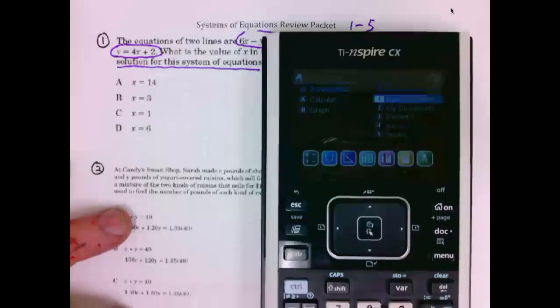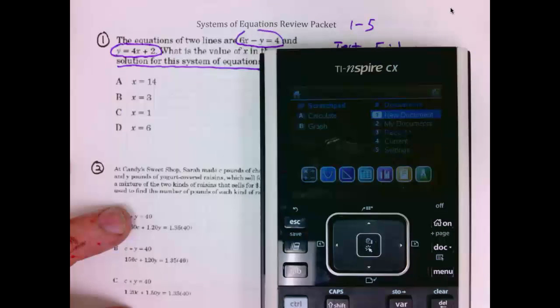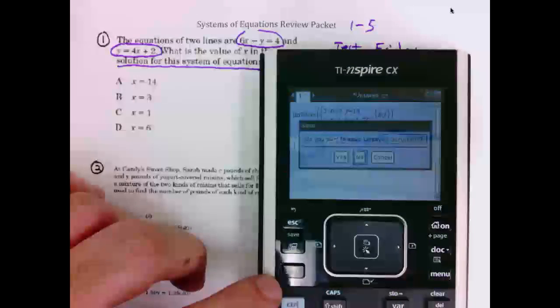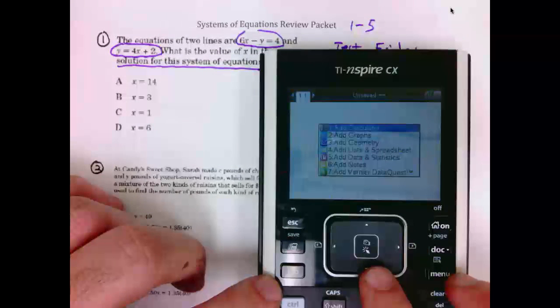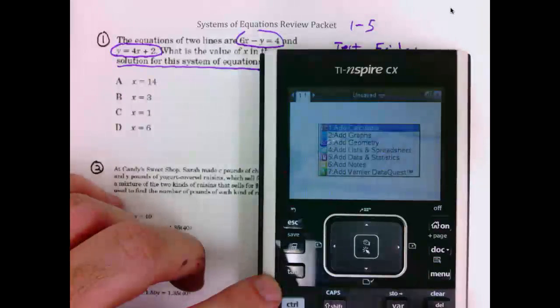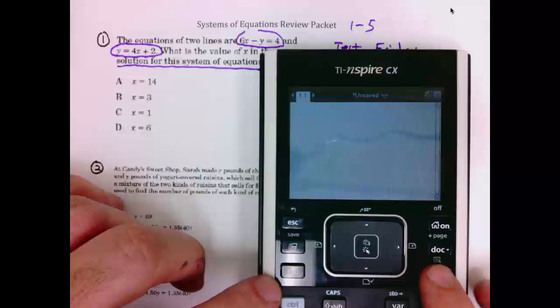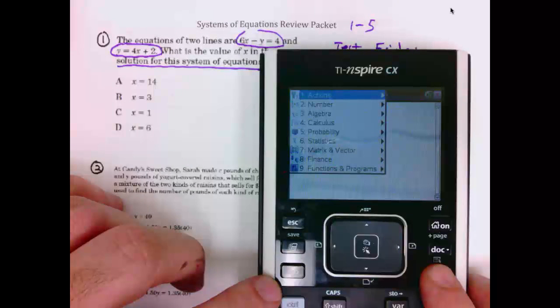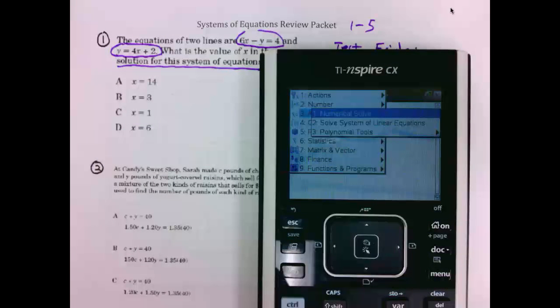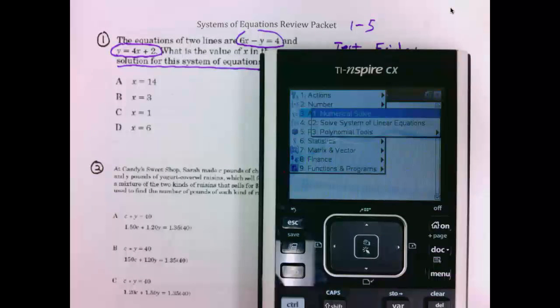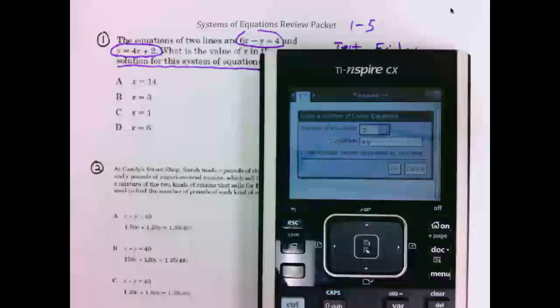From the home screen, we go add calculator 1, 1, then menu, then 3, algebra, then 2, solve system of linear equations. Number of equations, 2, variables are x and y. We are ready to go. Simply hit OK.